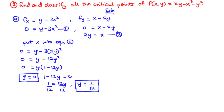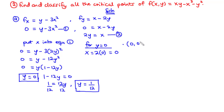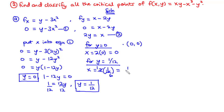We substitute the values of y into equation 2 to find x. For y equals 0, x equals 2 times 0, which is 0, giving our first critical point (0, 0). For y equals 1 over 12, x equals 2 times 1 over 12, which simplifies to 1 over 6. So our second critical point is (1/6, 1/12).